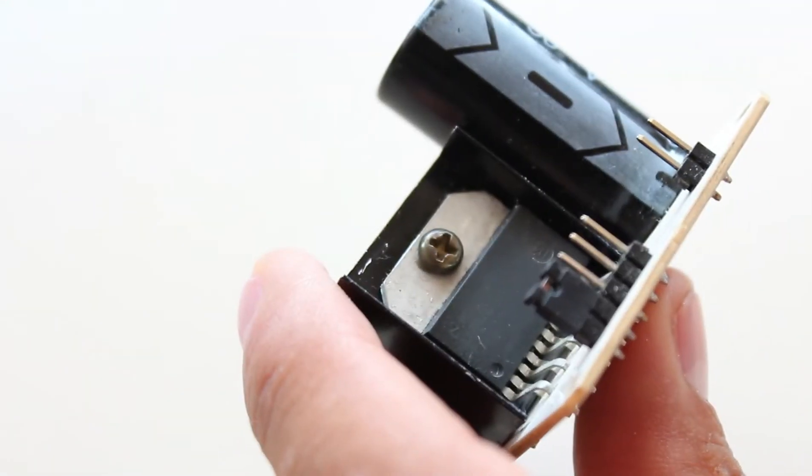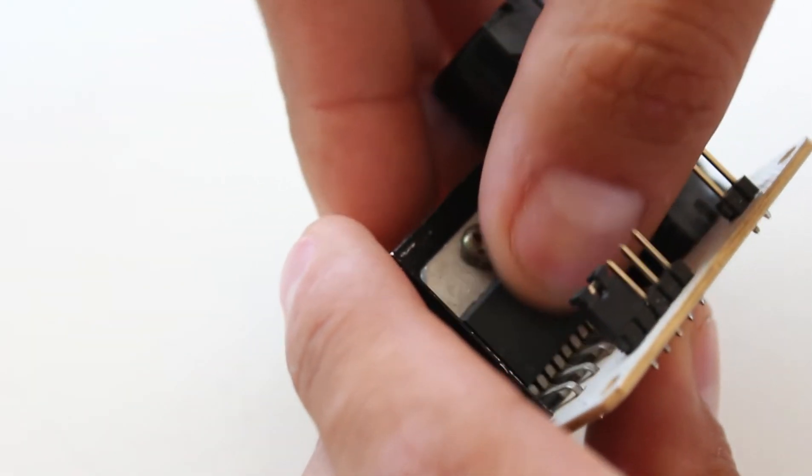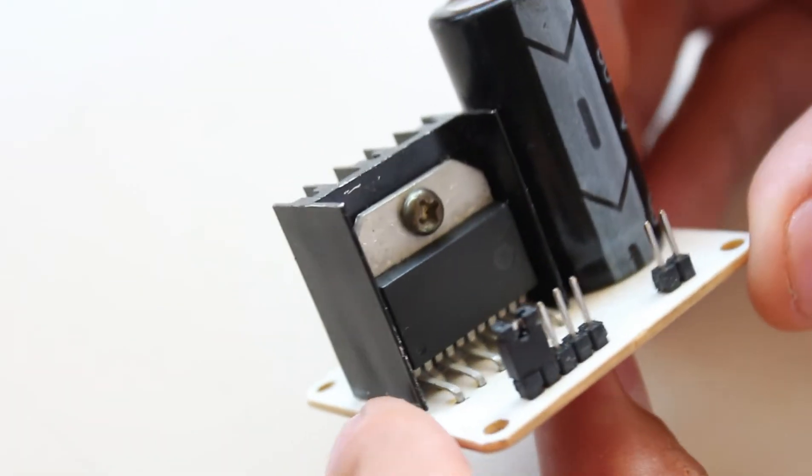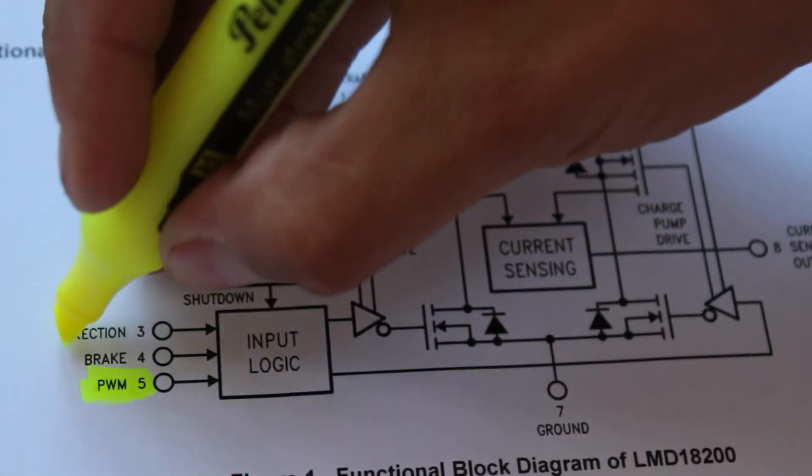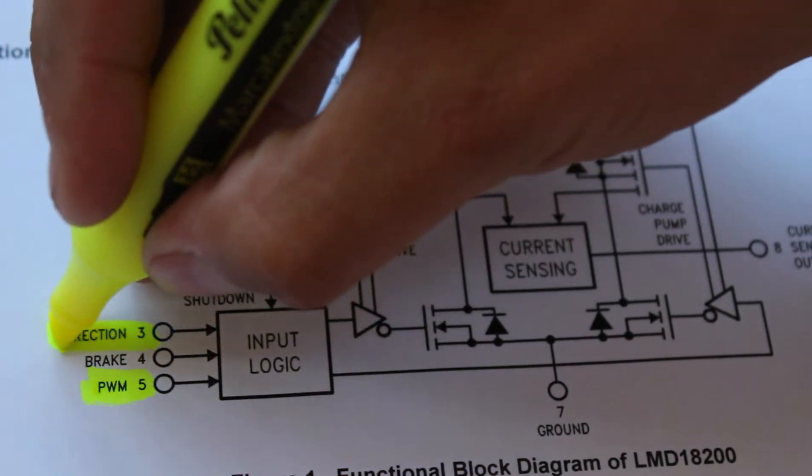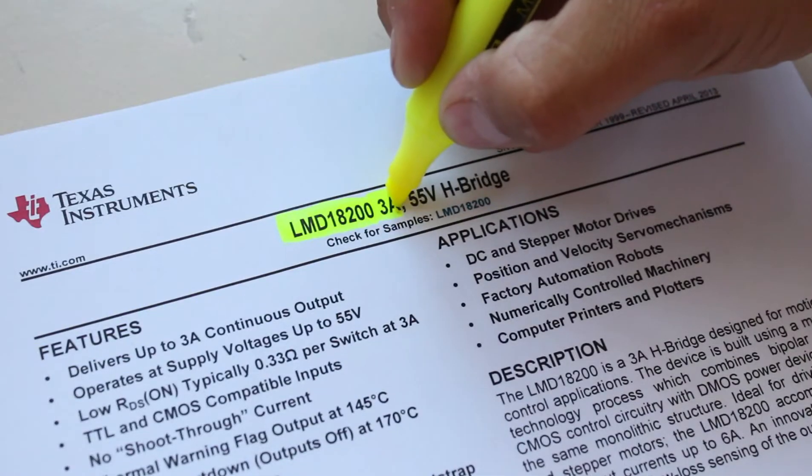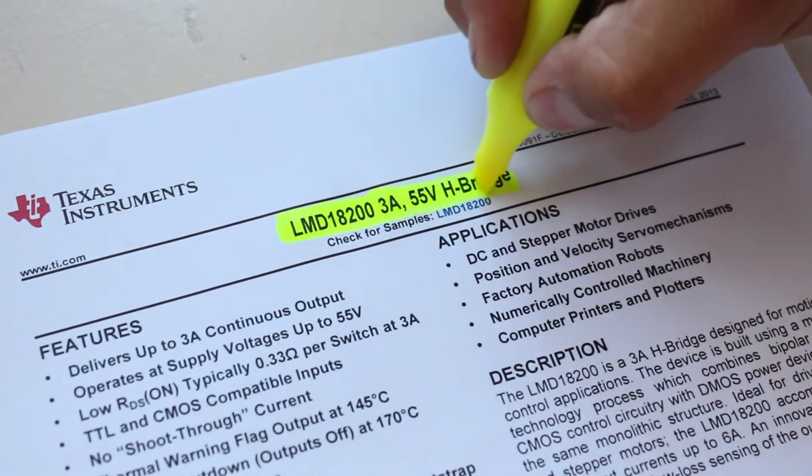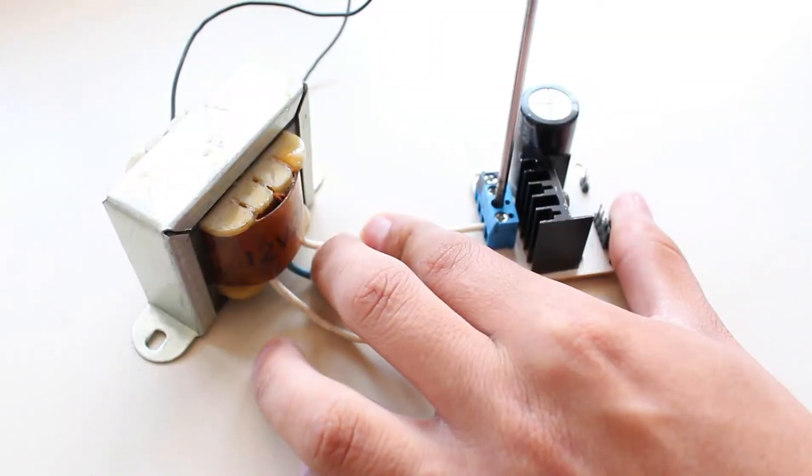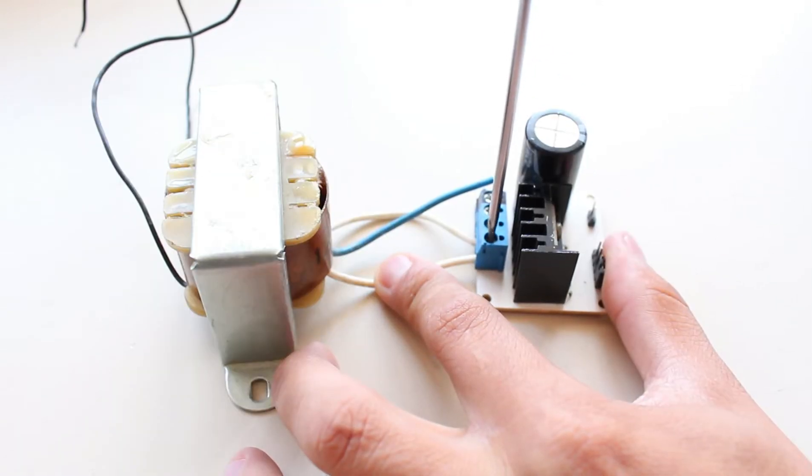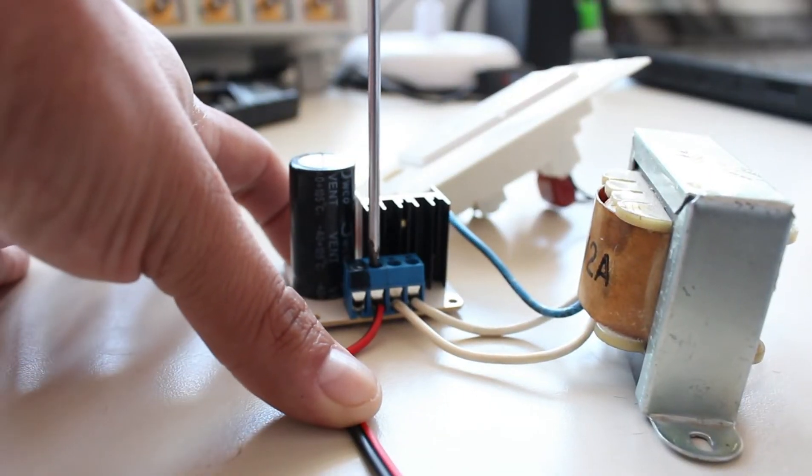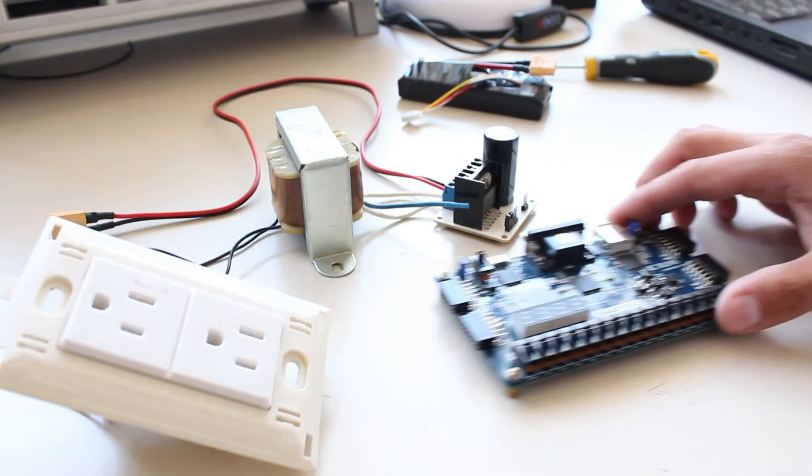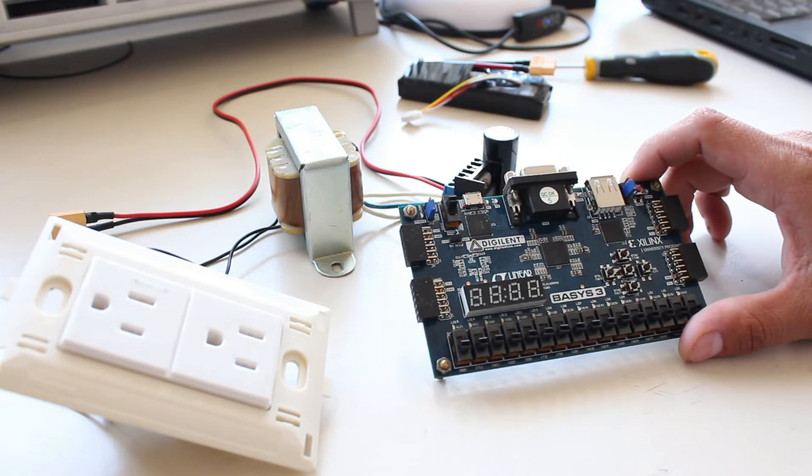I use the LMD18200 full H-bridge as a power amplifier. So, I need to generate a PWM and direction signals. This power circuit can handle up to 55V and 3A continuously. I hook up the H-bridge with the secondary coil of transformer, while the primary is connected in parallel with a capacitor and a plug cord.